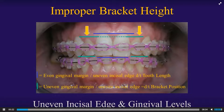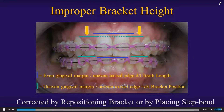In this case, that's what the lateral has. One of those brackets is at the improper height, so they have uneven incisal edges and gingival levels as compared to the contralateral side. You can correct this by repositioning the brackets, which is what I recommend beginners generally do — remove that bracket and reposition it to the proper height.